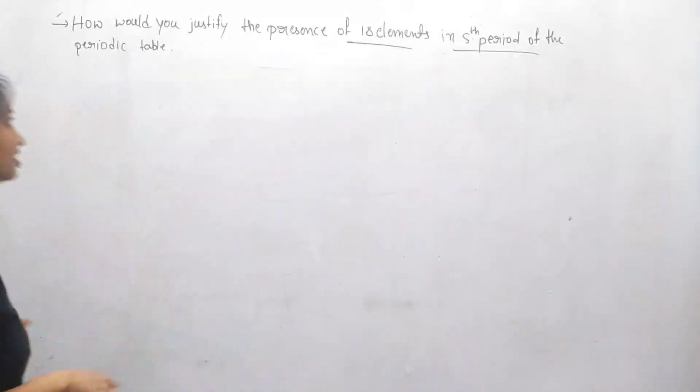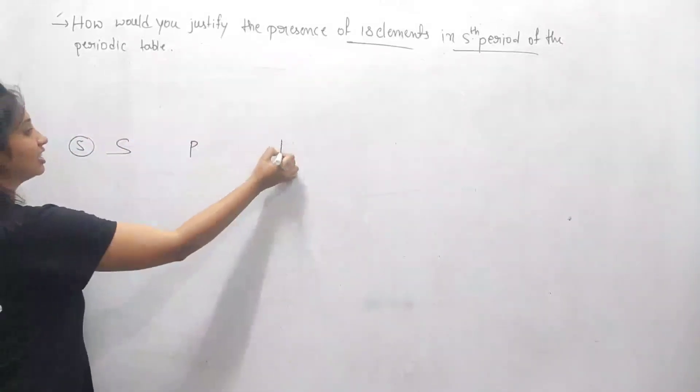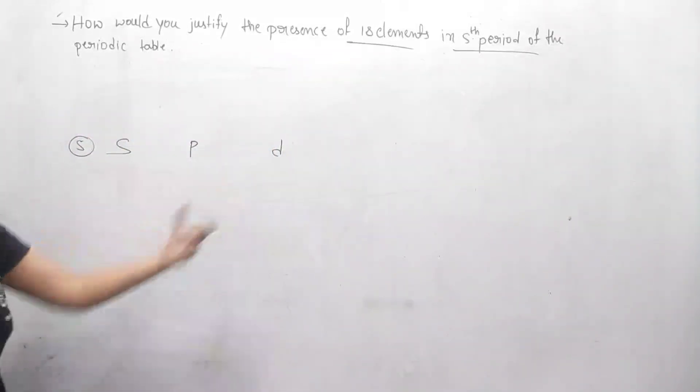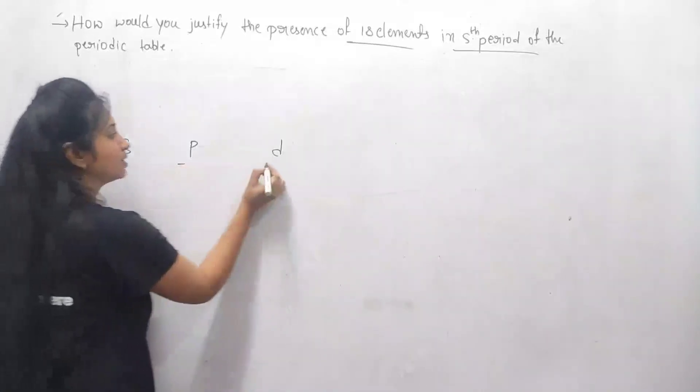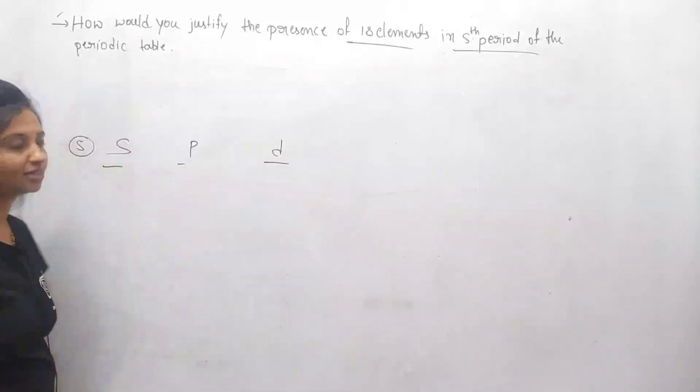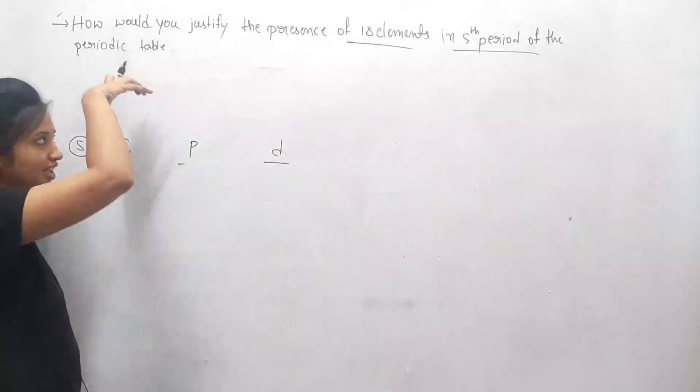Already you know that the fifth period includes s block, p block, and d block elements. We divide the s block, p block, and d block elements according to their electrons entered into their outermost orbital.